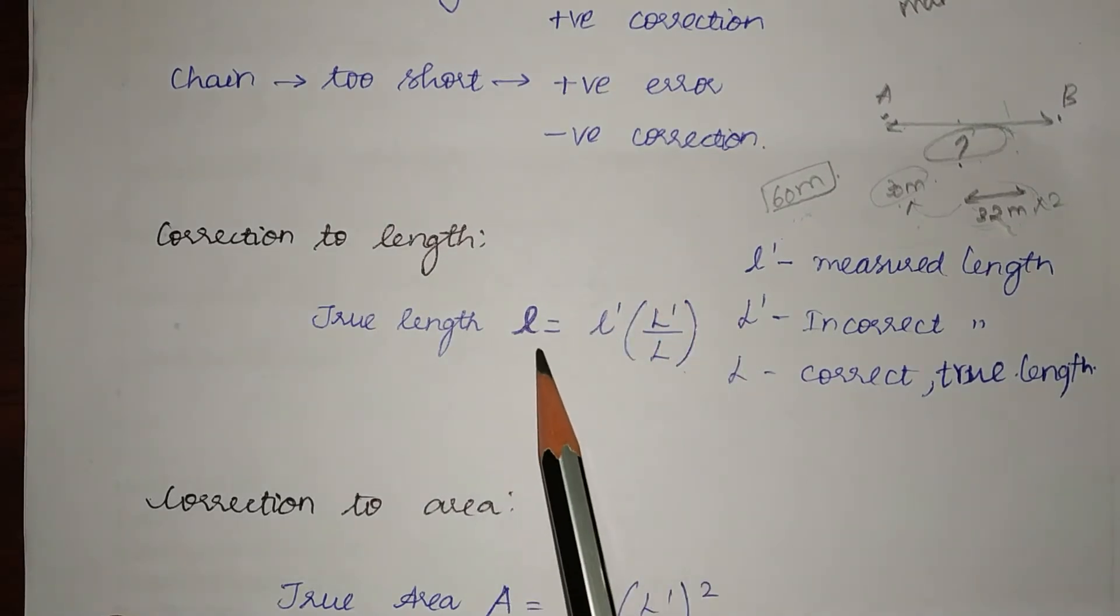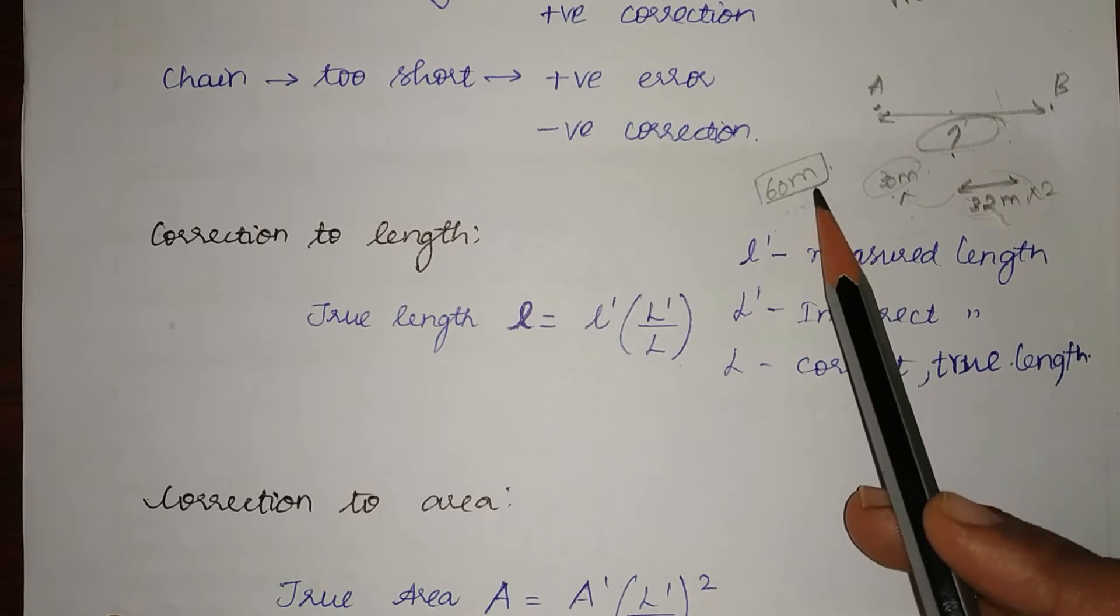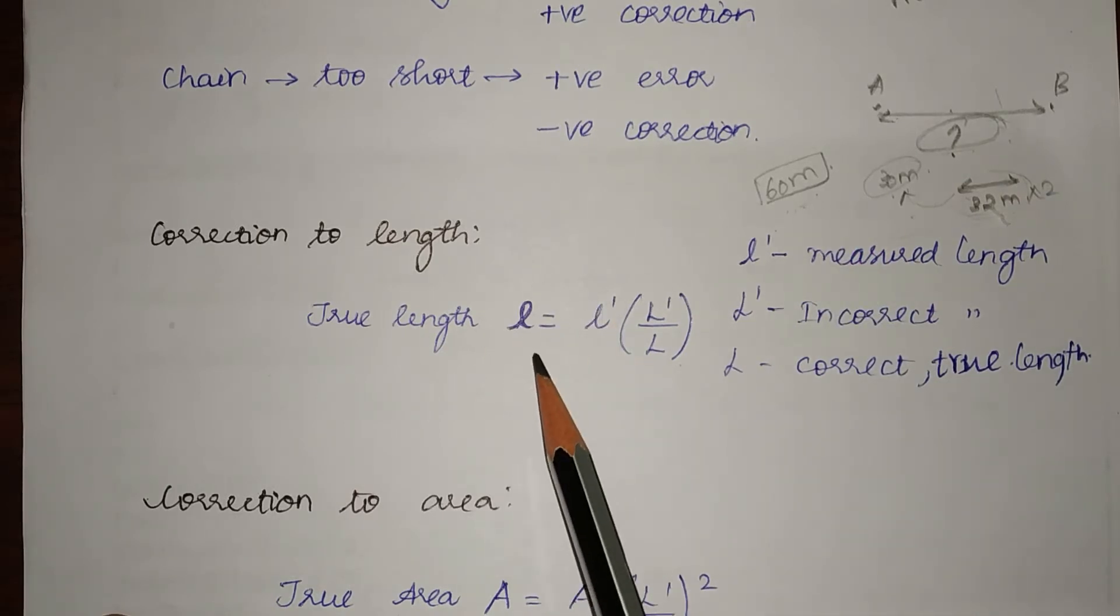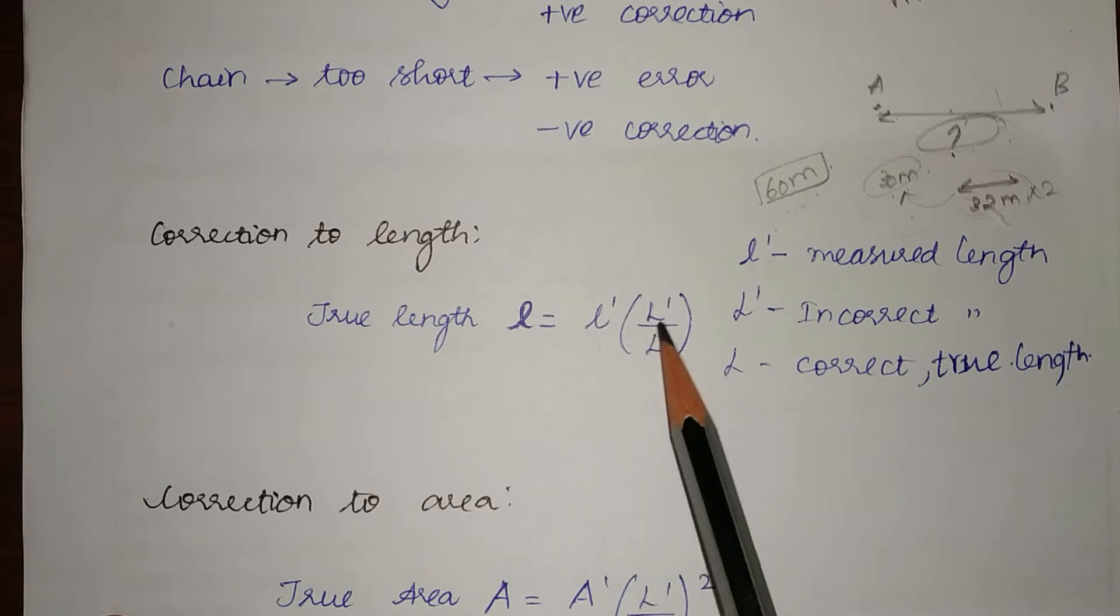The true length is equal to measured length times incorrect length divided by correct length, or the length that the manufacturer has claimed.